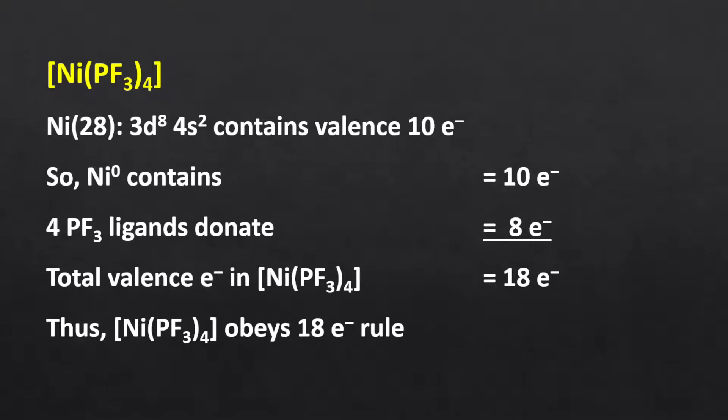Nickel tetrakis(trifluorophosphine): the atomic number of nickel is 28, so the electronic configuration of its valence shell is 3d8, 4s2. The oxidation state of nickel in this complex is 0. Thus, there are 10 valence electrons. Also, each trifluorophosphine ligand will donate 2 electrons, so overall 8 electrons from the 4 ligands. Consequently, the total valence electron count is 18, so the complex follows the 18 electron rule and is stable.